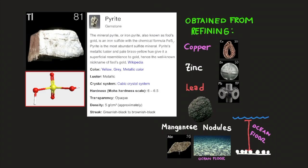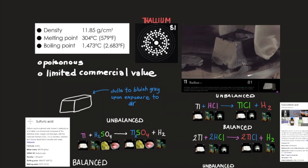Thallium is found in several ores. One of these is pyrites, which is used to produce sulfuric acid. Some thallium is obtained from pyrites, but it is mainly obtained as a byproduct of copper, zinc, and lead refining. Thallium is also present in manganese nodules found on the ocean floor. Thallium TL chemical element metal of main group 13 of the periodic table, poisonous and of limited commercial value.